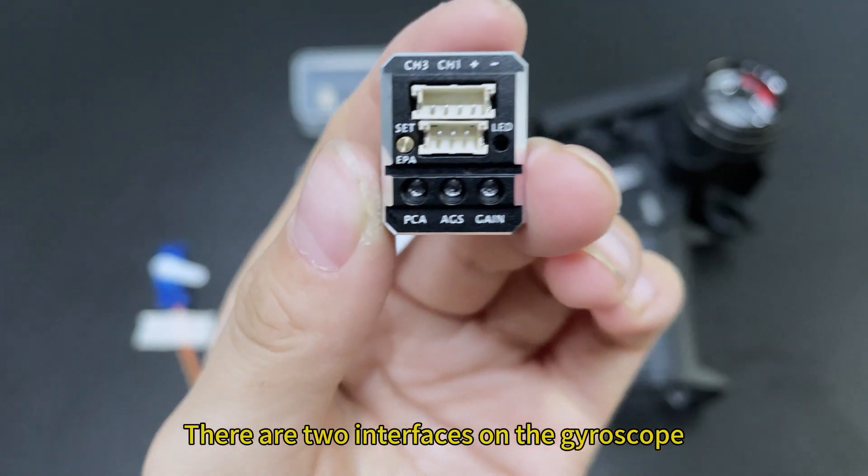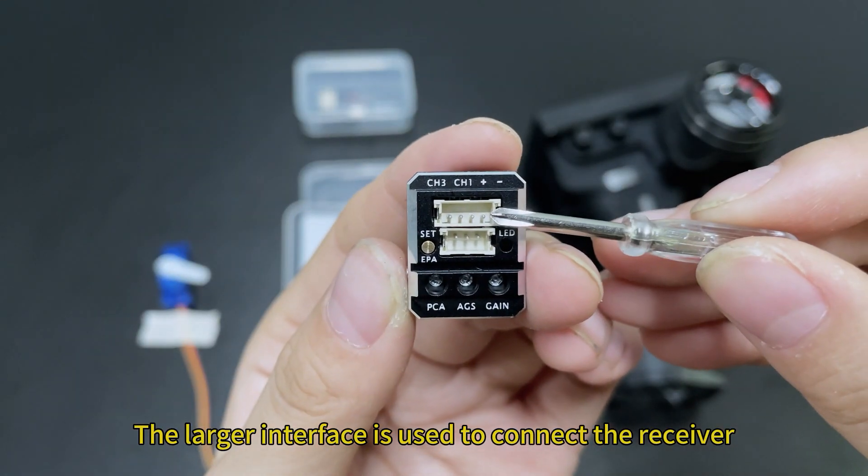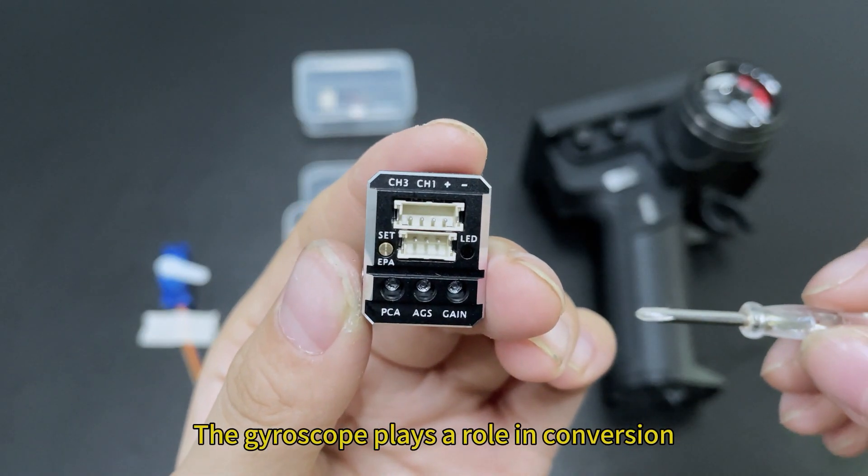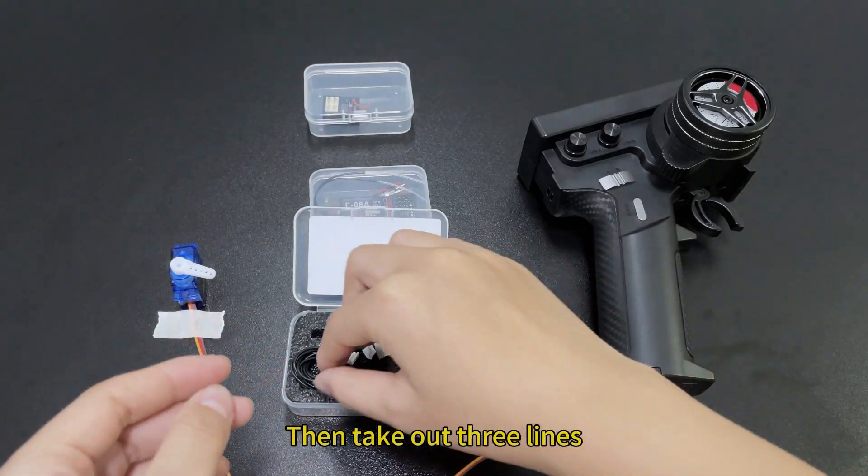There are two interfaces on the gyroscope. The larger interface is used to connect the receiver. This interface is connected to the servo motor. The gyroscope plays a role in conversion, then take out three lines.